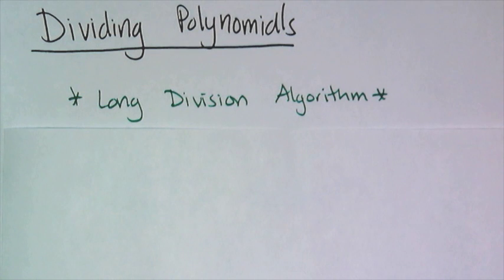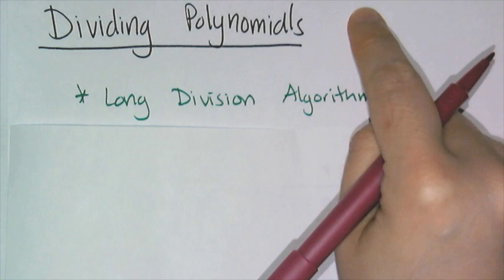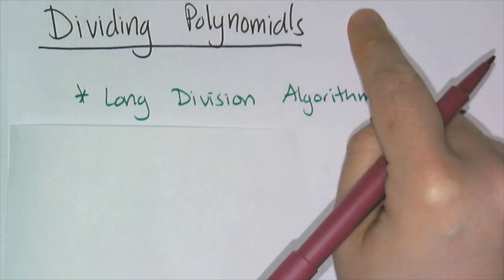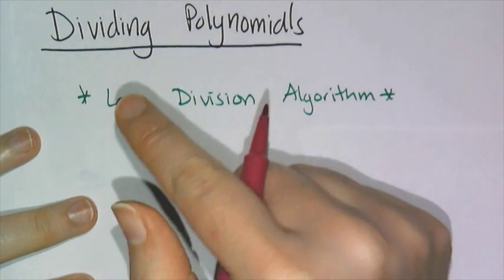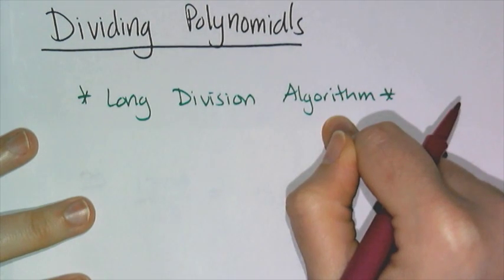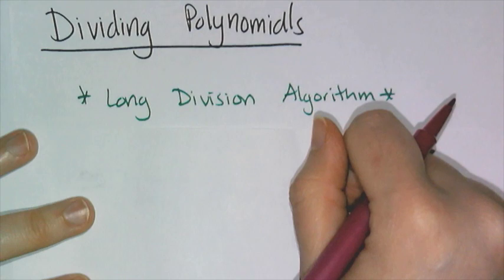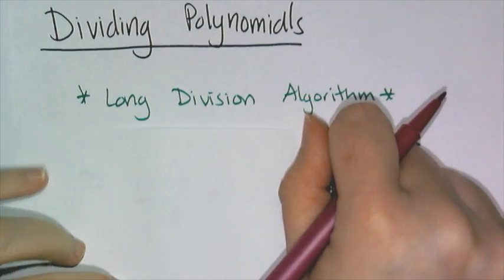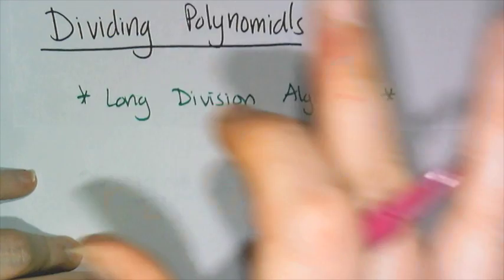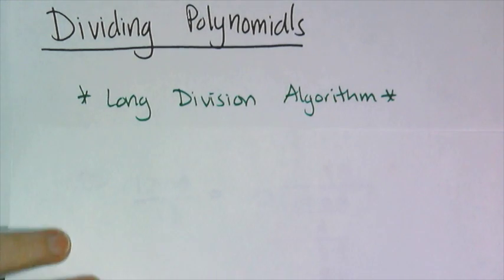In this final lesson of Algebra 1, we are going to talk about dividing polynomials. Dividing polynomials is just like plain old long division. So if you never learned the long division algorithm from elementary school, that's going to be a problem — you'll probably be lost during this lesson. So let's do a quick recap of how we do long division.